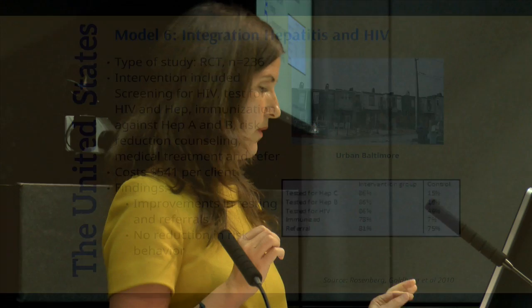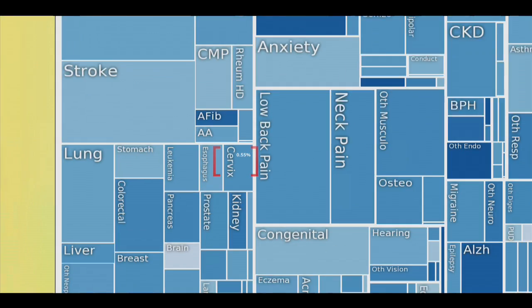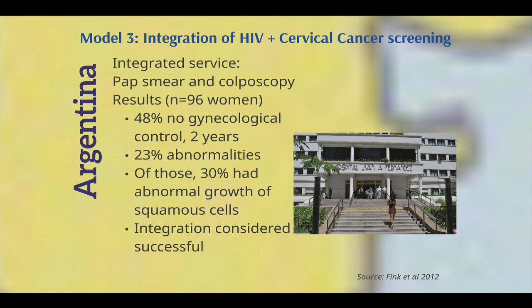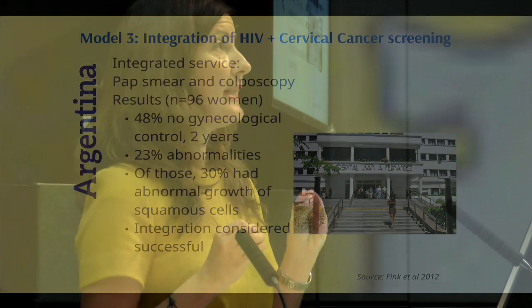Moving to Argentina, we focus on cervical cancer with HIV prevalence of 0.5%. The model is integration of HIV and cervical cancer screening. I've chosen two examples because even within the models identified, there are different interventions proposed — which complicates the systematic review since within each model there are sub-models. At Hospital Juan Fernández, they provided pap smear and colposcopy in 1,996 HIV-positive women. They found 23% had abnormalities, and of those, 30% had abnormal squamous cell growth. The authors agreed the integration was successful, particularly given those percentages.